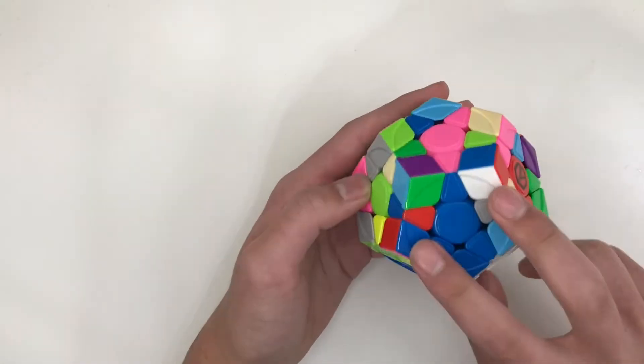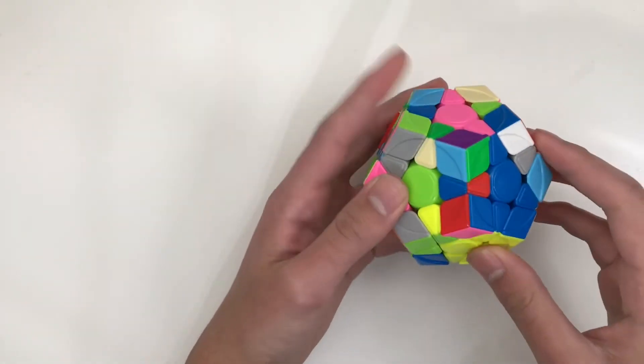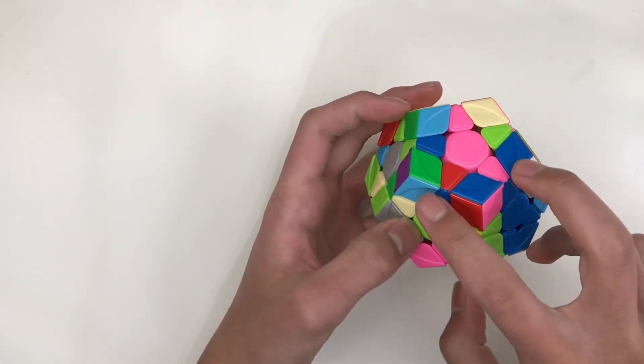For cases that look like you would normally pair them up like this, rotate and then insert, you can often just do an F' instead, which sets it up to a three mover.